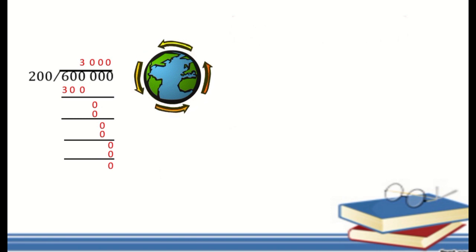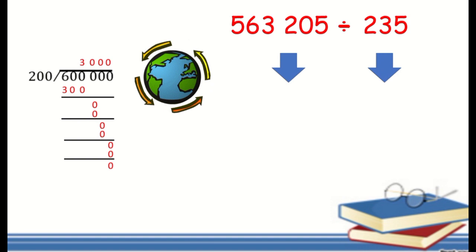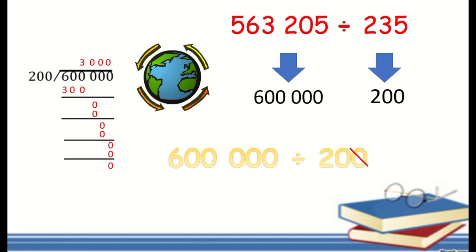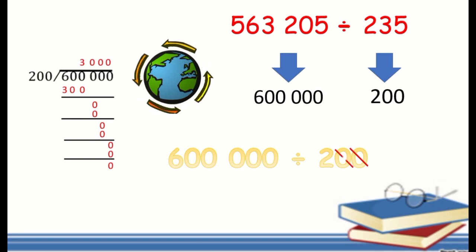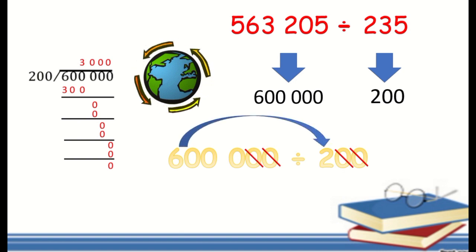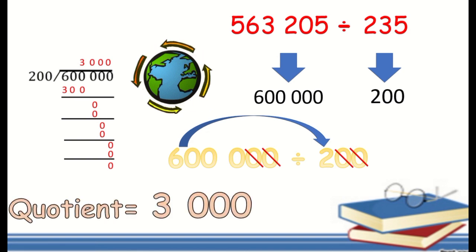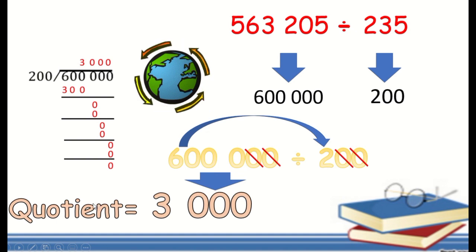Now let's use the shortcut method. We have 600,000 divided by 200. Cancel or remove zeros — there are two zeros in the divisor, so cancel two zeros from each side. We have 6,000 divided by 2. Since 6 divided by 2 is possible, that gives us 3. Copy the remaining three uncancelled zeros, and we get a quotient of 3,000. Wait — checking the estimation, 600,000 ÷ 200 = 3,000, but our earlier answer was 300. The shortcut confirms the quotient of 300.